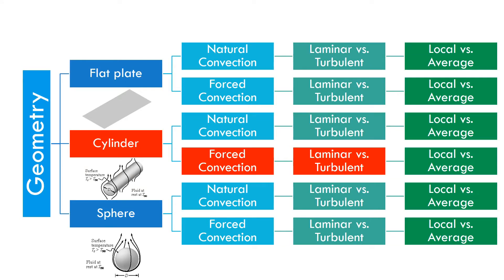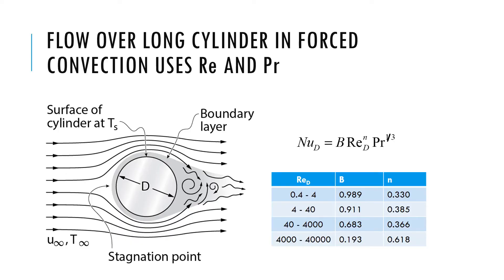As we are discussing convection in different situations, we are looking at the effects of geometry. We talked about the flat plate. The next common shape that many real objects can be approximated to is a cylinder. Next we're going to do cylinder in forced convection and then natural convection — first forced convection.